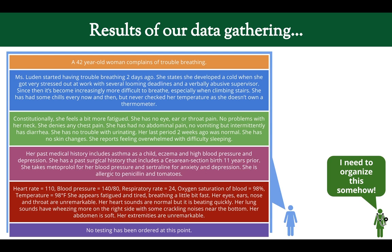Here's a case example. Our patient is a 42-year-old woman complaining of trouble breathing — that's our initial data. Miss Luden has been having trouble breathing that started about two days ago. She developed a cold and thought it was from work stress due to deadlines and a difficult boss. Since then it's become increasingly difficult to breathe, especially when climbing stairs. She has chills and isn't sure if she has a fever because she doesn't own a thermometer.